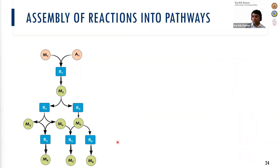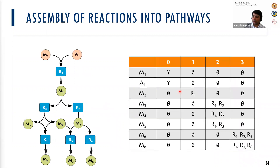We assemble these reactions into pathways. The output is a table: to produce metabolite M8 using three reactions, there is one way — R1, R3, and R6 — and you cannot produce it with fewer than three reactions. Similarly, metabolites M3 and M4 can be produced using two reactions. In larger networks this becomes a much larger table, and we needed some computational ingenuity that was provided by Aarti and Meghna to enable this.